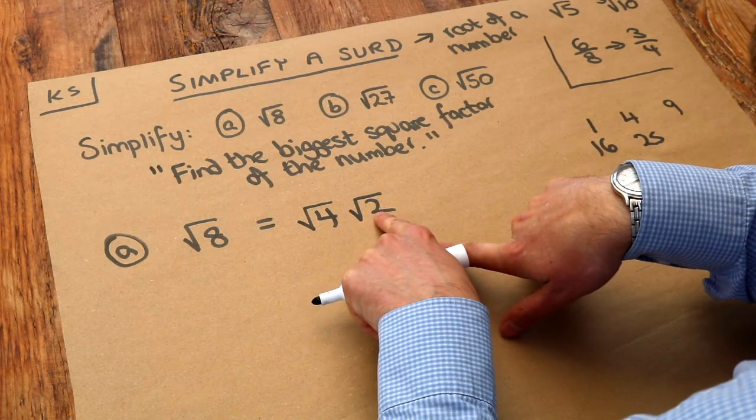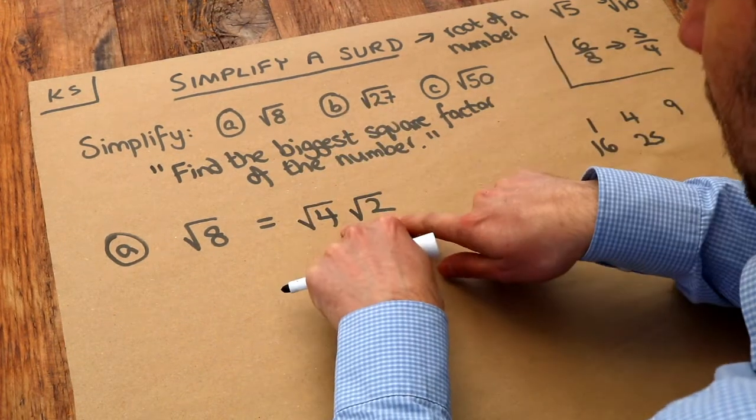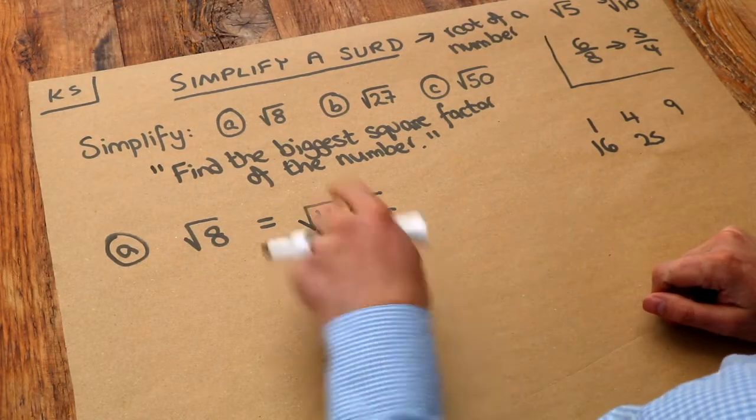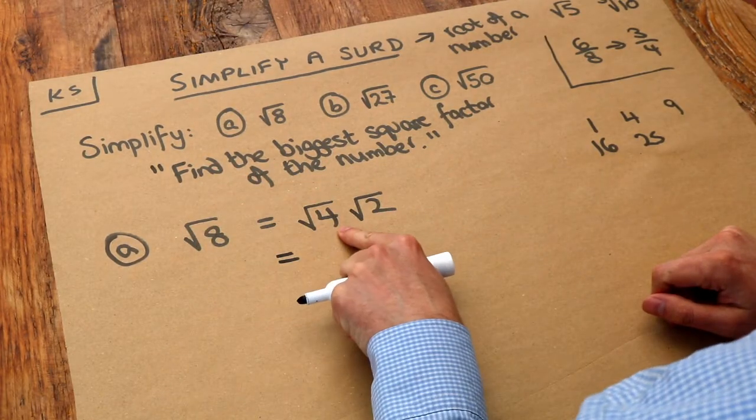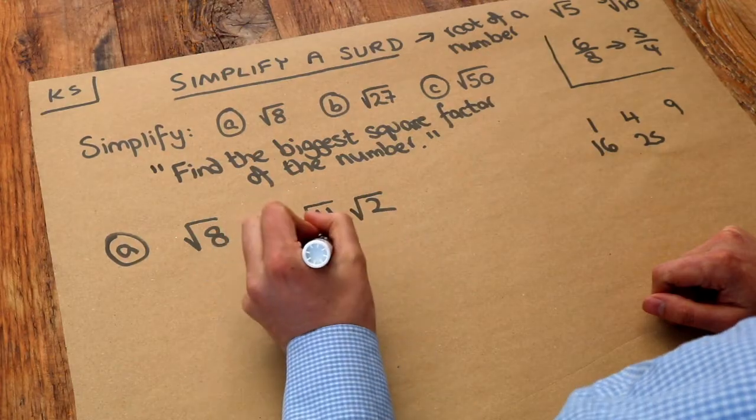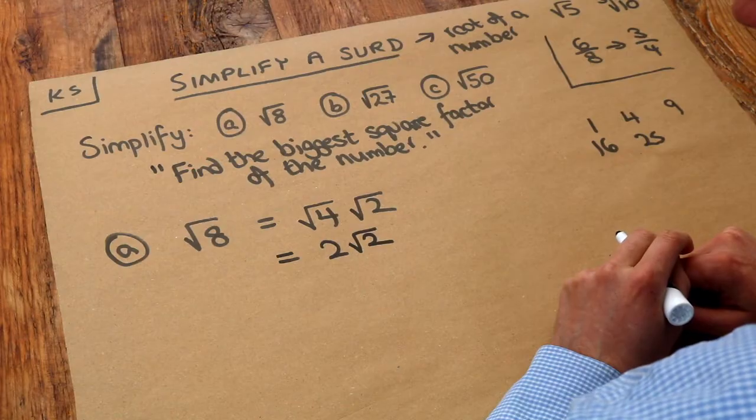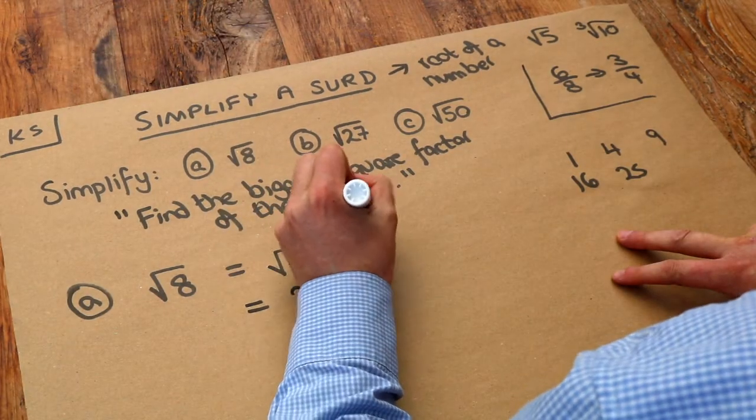Now the reason I put that square number first is because, well, what's the square root of 4? It's 2, isn't it? So we just end up with 2 times root 2, but we'd write it as 2 root 2. So put the square number first. Let's do it for these other examples.